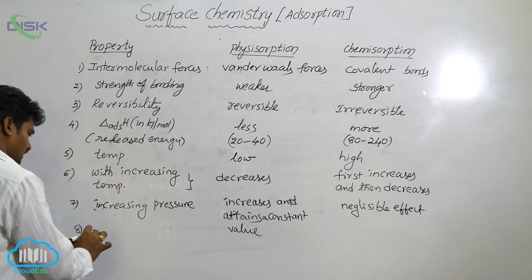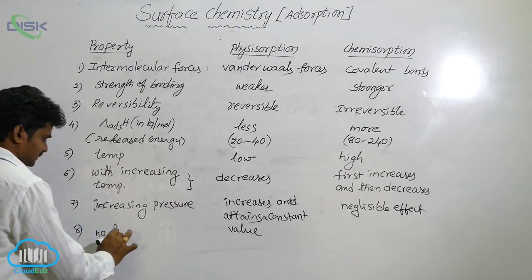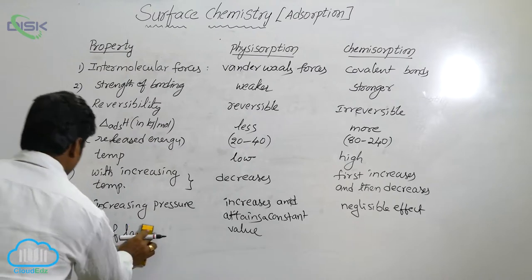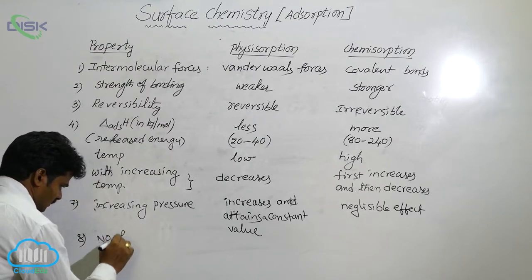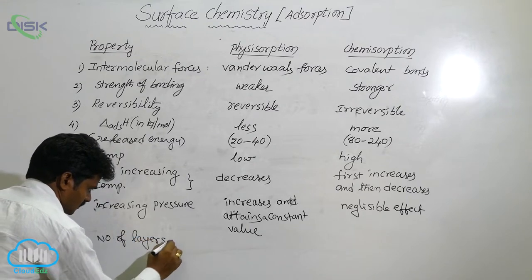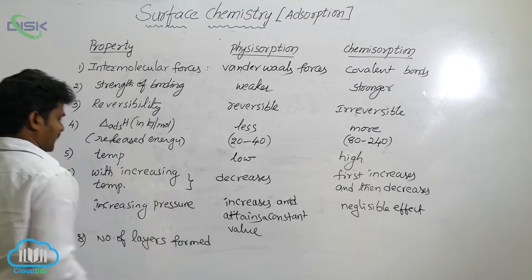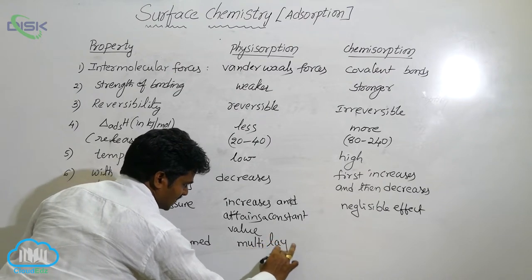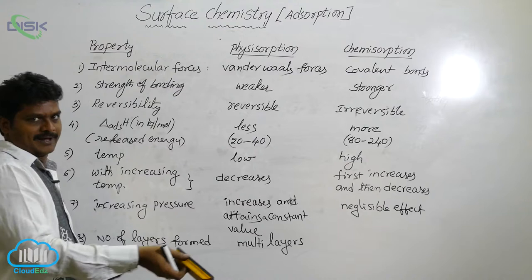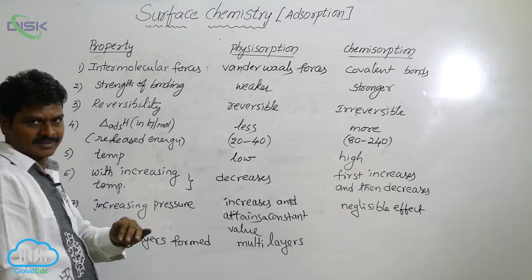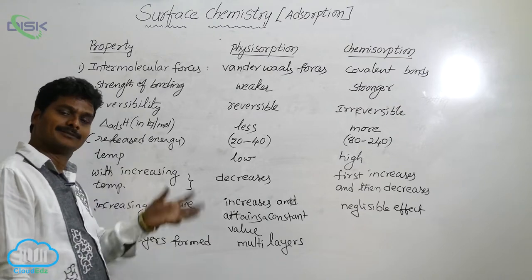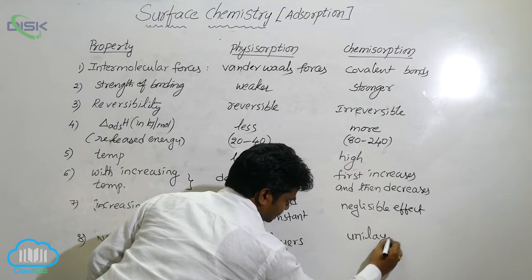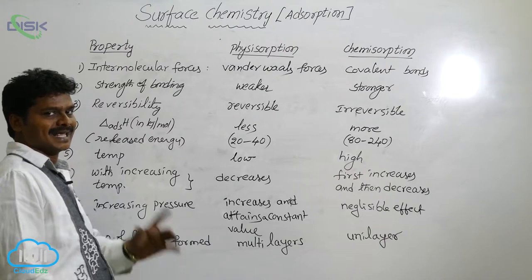The eighth property is the number of layers formed. In physical adsorption, multilayers are formed — that means more than one layer. Physical adsorption is not confined to a single layer. Whereas in chemical adsorption, unilayer formation takes place, meaning only a single layer is formed.